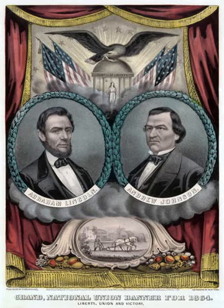The National Union Party adopted the following goals as its platform: pursuit of the war until the Confederacy surrendered unconditionally, a constitutional amendment for the abolition of slavery, aid to disabled Union veterans, continued European neutrality, enforcement of the Monroe Doctrine, encouragement of immigration, and construction of a transcontinental railroad. It also praised the use of black troops and Lincoln's management of the war.